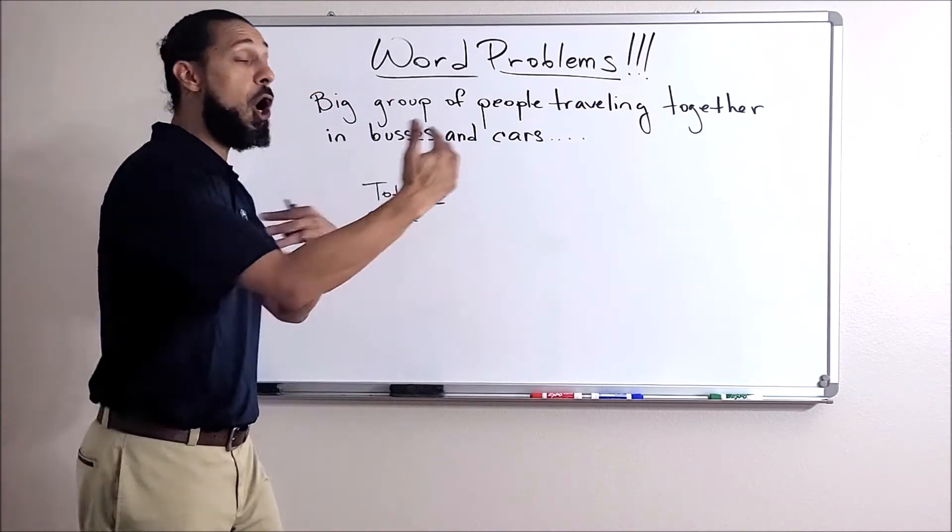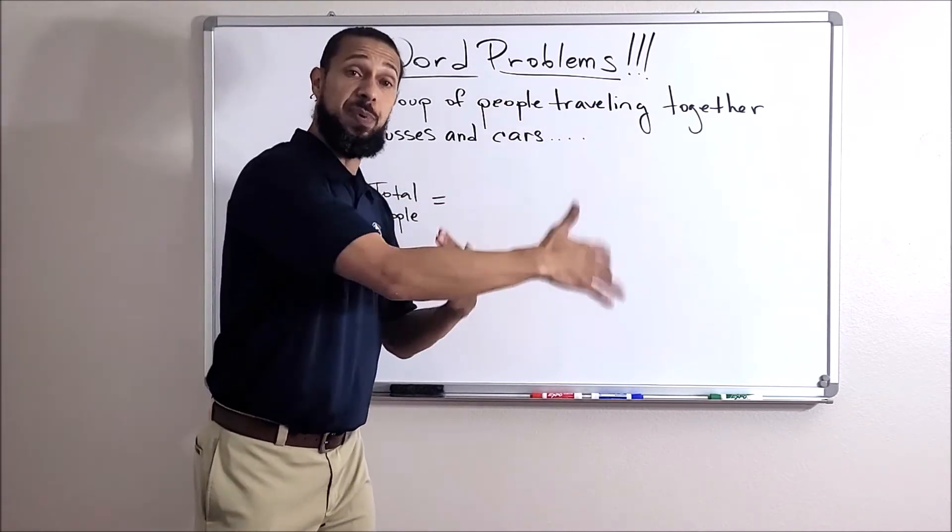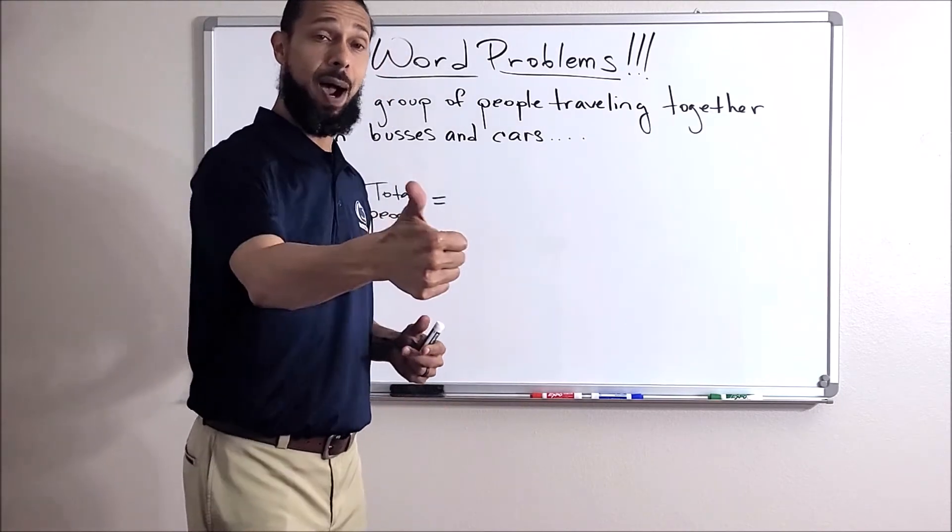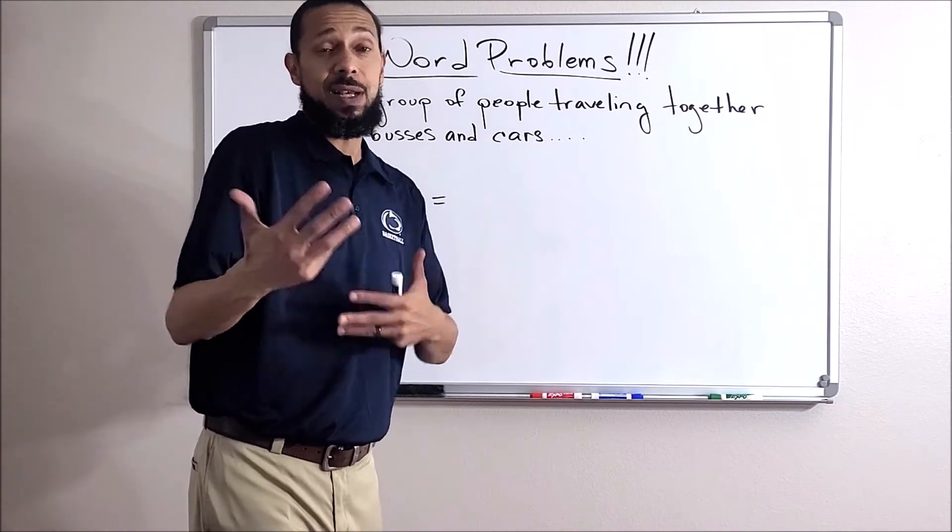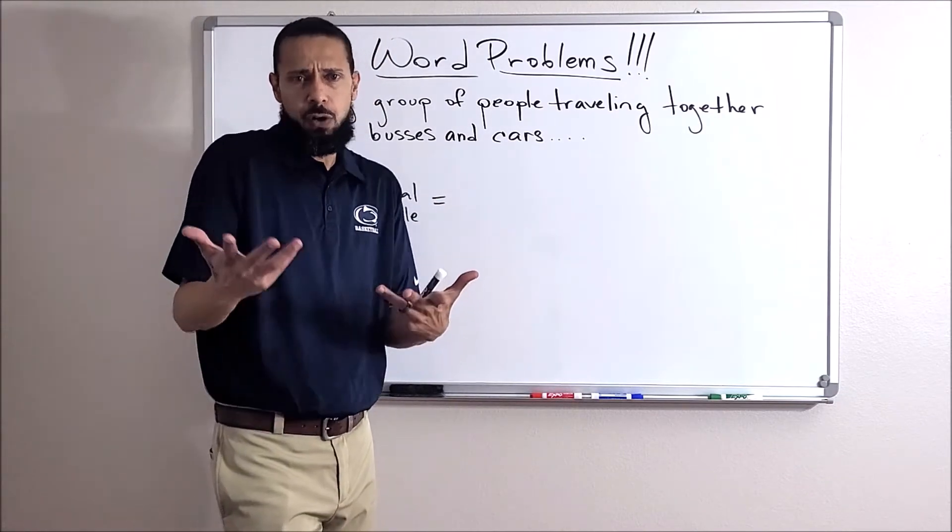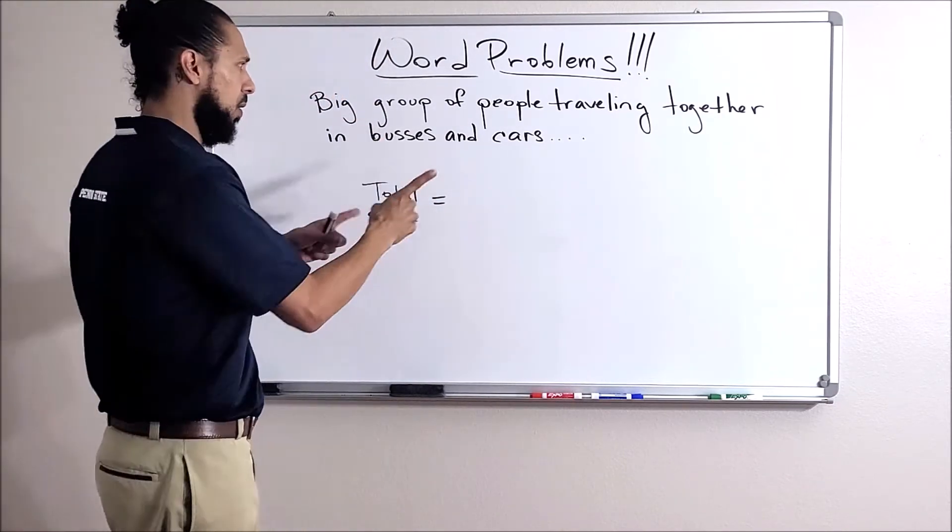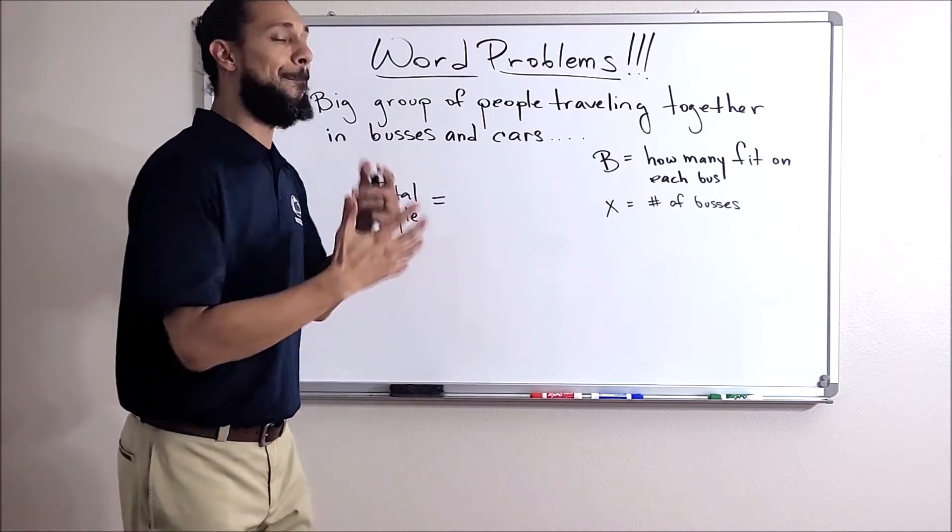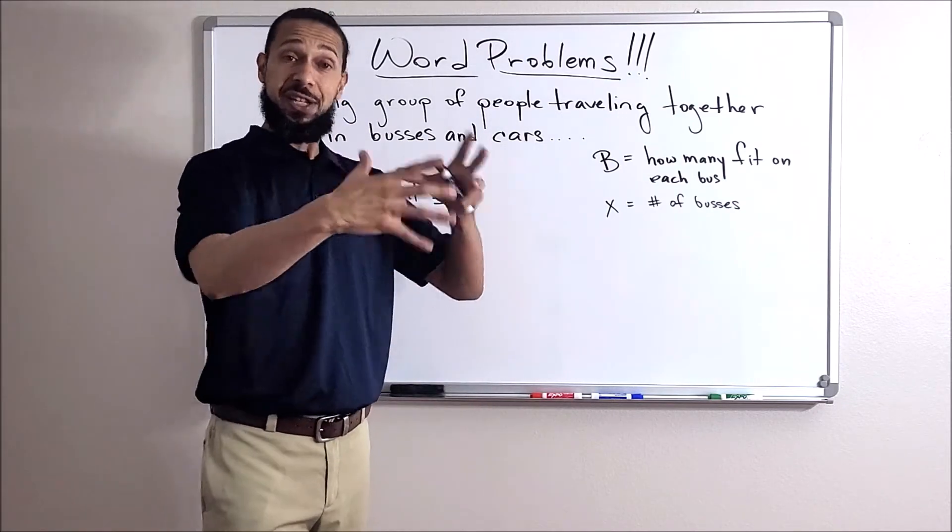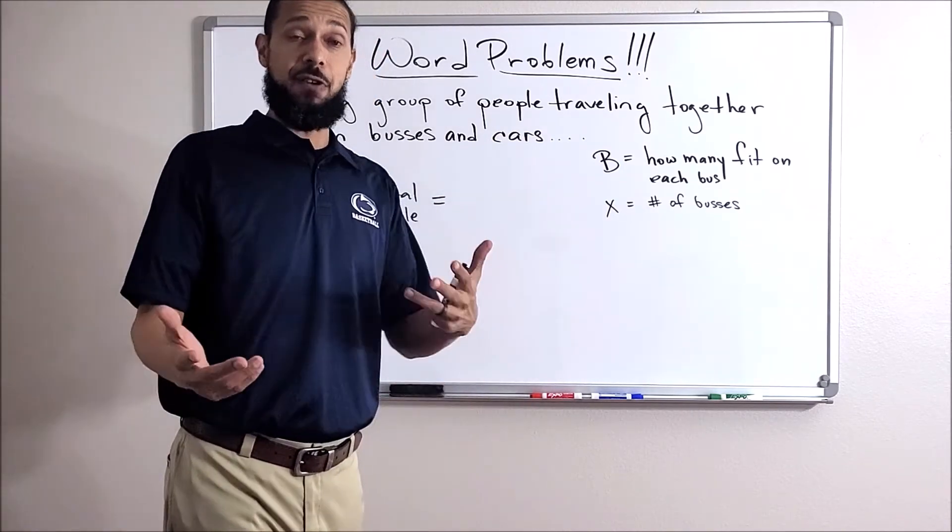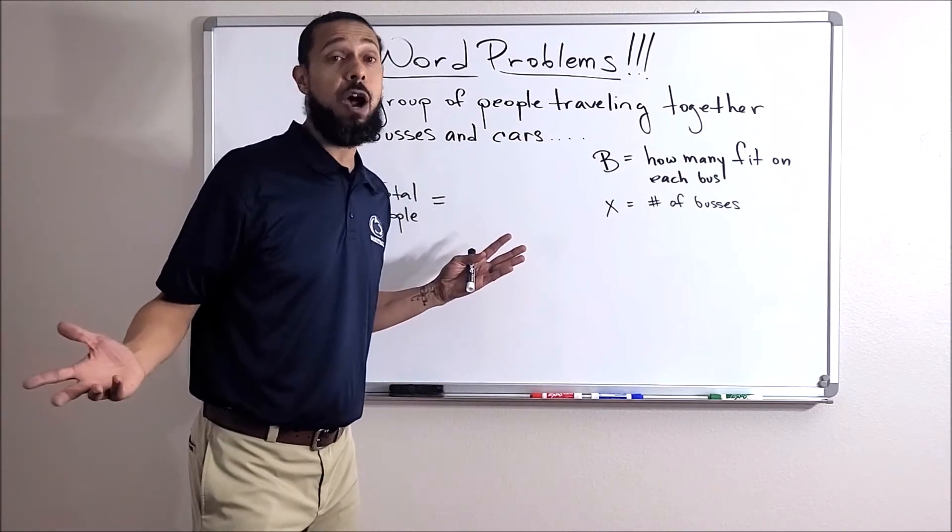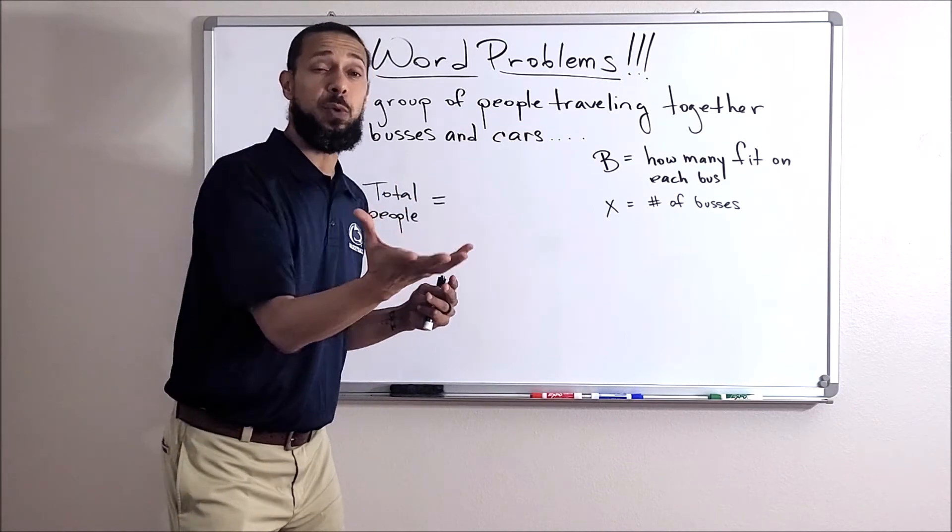So how can we come up with an equation or a math equation to talk about, to show the total number of people that are traveling? They're traveling by bus and they're traveling by car. Now each bus has to fit a certain amount of people. Couldn't we say B is the number of people that fit on each bus, right? And then we can say X is the number of buses there are.